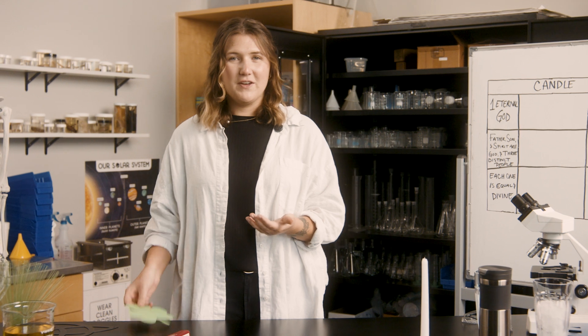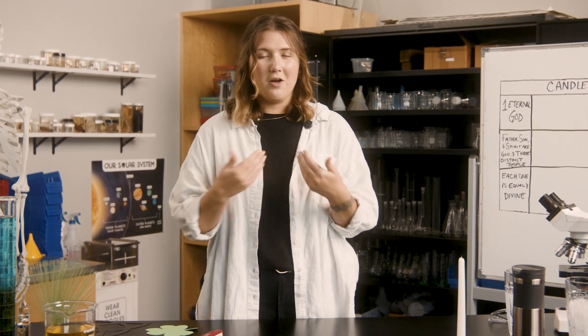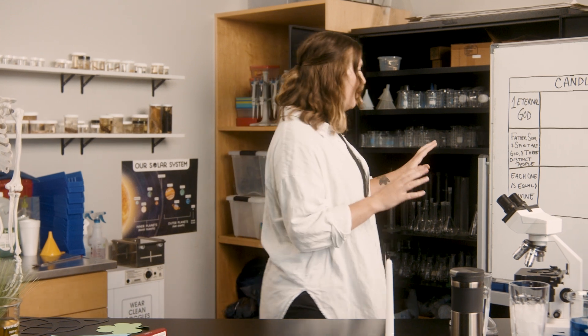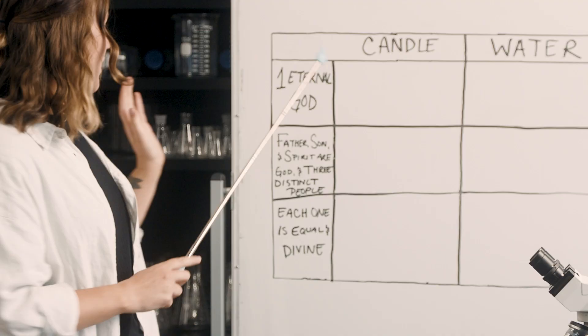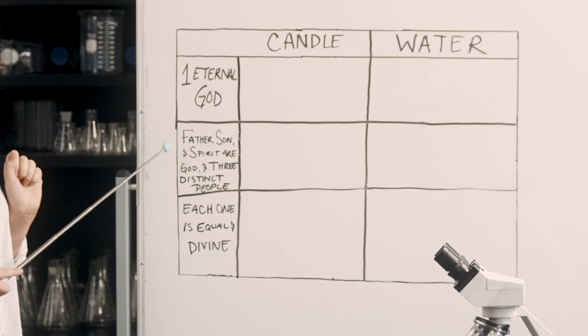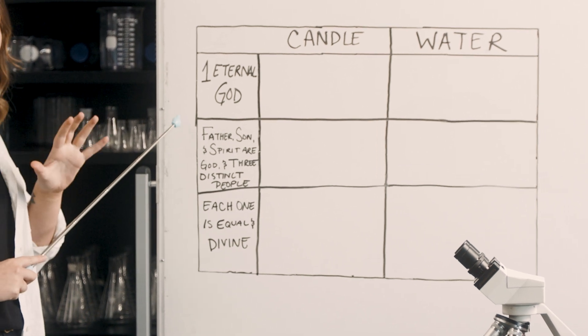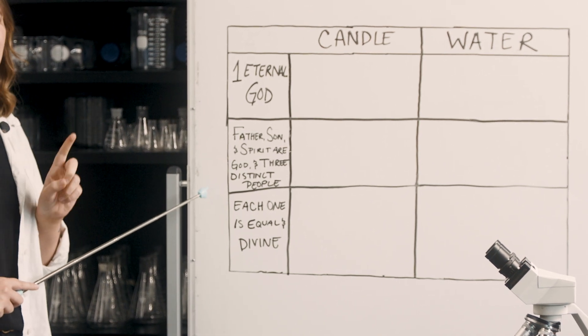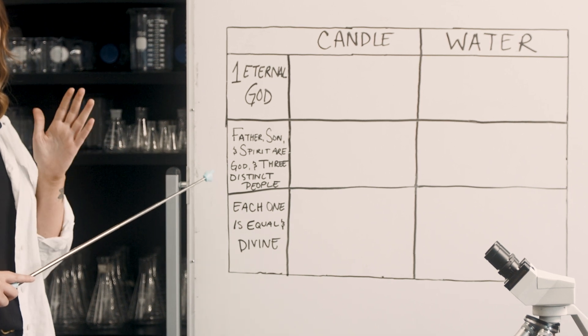The Trinity means that there's only one God, but he has three equal persons: Father, Son, and Spirit. There are a lot of different ways that we can try to explain this, and there are some symbols that we use, but some honestly work a little better than others. Our mission today is to do a couple of experiments to see which symbol meets all the requirements to properly explain the Trinity. Number one, the symbol must show that there is only one eternal God. Number two, it must demonstrate that the Father, Son, and Spirit are all God but distinct persons. And number three, it must explain that each person of the Trinity is equal and shares the same divine nature.